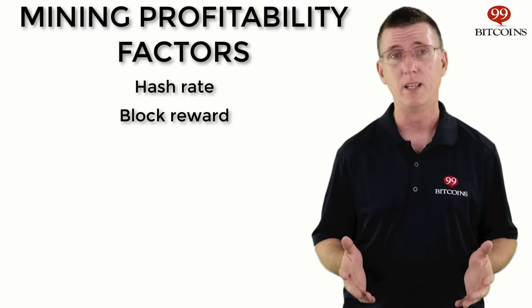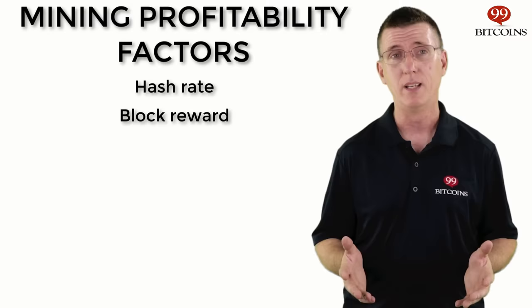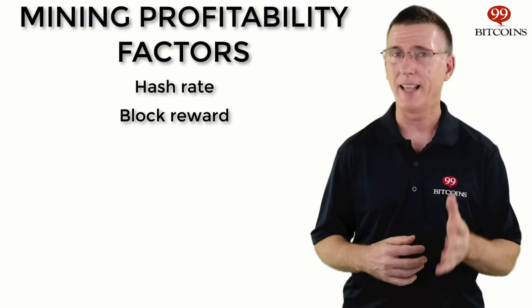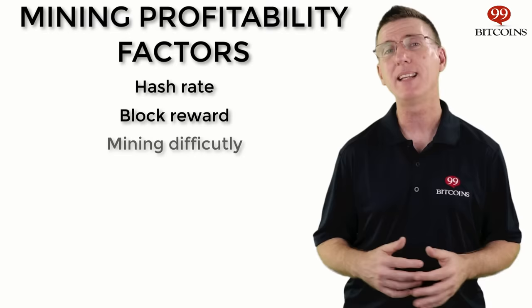Number two: the Bitcoin reward per block. This refers to the number of bitcoins generated when a miner finds the solution. This number started at 50 bitcoins back in 2009 and is halved every 210,000 blocks, or about every four years. The current number of bitcoins awarded per block is 12.5. The last block halving occurred in July 2016, and the next one will be in 2020.